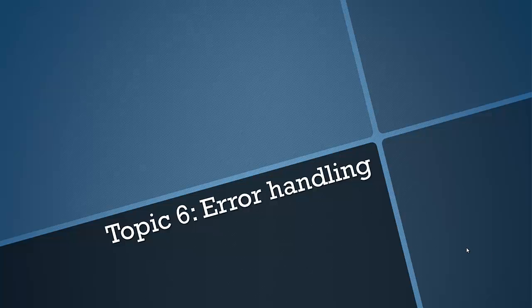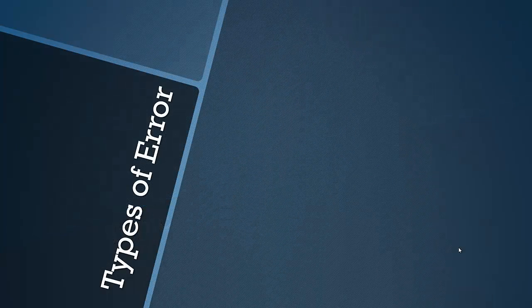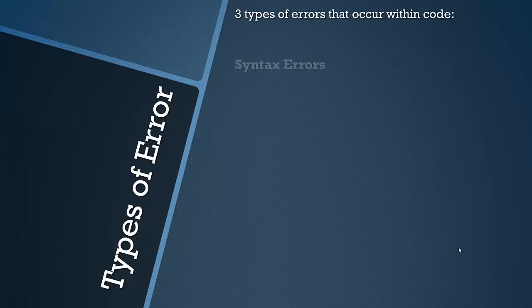Hello everyone and welcome back to another video covering the AQA GCSE Computer Science course. We're moving on to topic number 6 today which is Error Handling, going through exactly what is mentioned in the specification which includes types of errors and how you handle them. So let's have a look at the three main types of errors that occur within code.